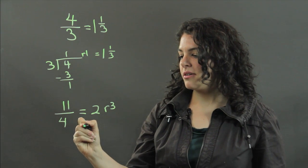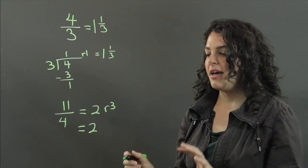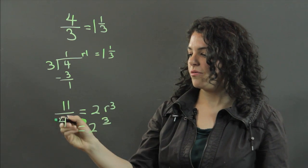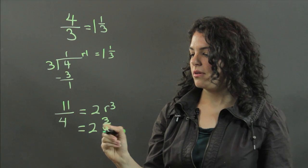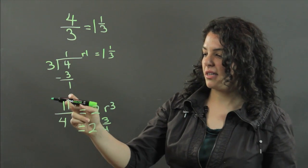And that can be rewritten as 2. And remember, the remainder can be written as the remainder over the divisor, so that would be 3 over 4 as our divisor. So 2 and 3 fourths is how we rewrite 11 fourths.